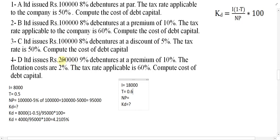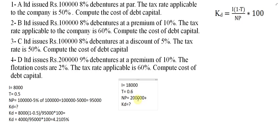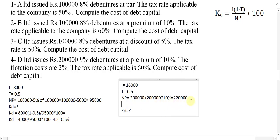NP is equal to — we have issued 2 lakh at a premium of 10 percentage. So NP is equal to 2 lakh plus 2 lakh into 10 percentage, which gives 2 lakh plus 20,000, becoming 2 lakh 20,000. But we also have to subtract the flotation cost, which is 2 percentage of the total value.